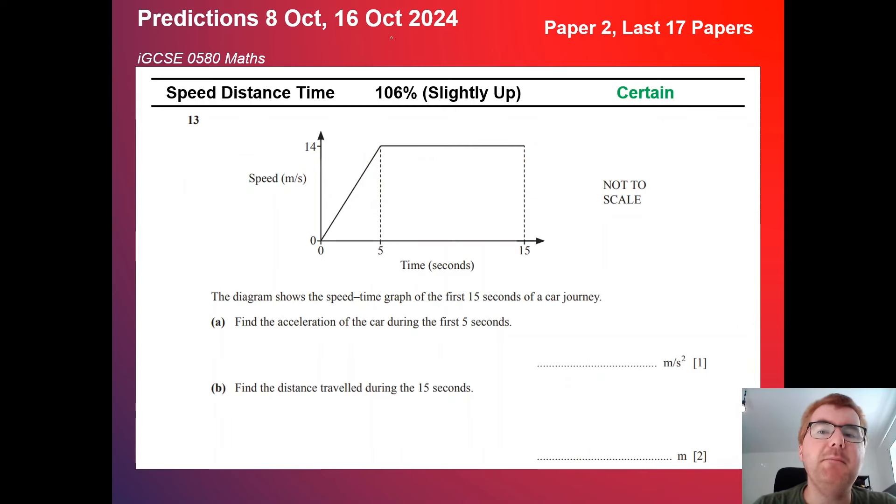On to speed distance time, has always been a very common topic. Here at 106%, we are slightly up here. It's in the certain category. This can be a distance time graph or a speed time graph. Those are the two different things. Here we've got a speed time graph, which means you need to work with acceleration and then know how to use the graph to actually work out the distance traveled. Very typical paper 2 question that we see here. Around in the middle of the paper, so question 13. Particularly if you're making sure you're getting those B grade questions, absolutely secure. Now, it's really important to know this topic.